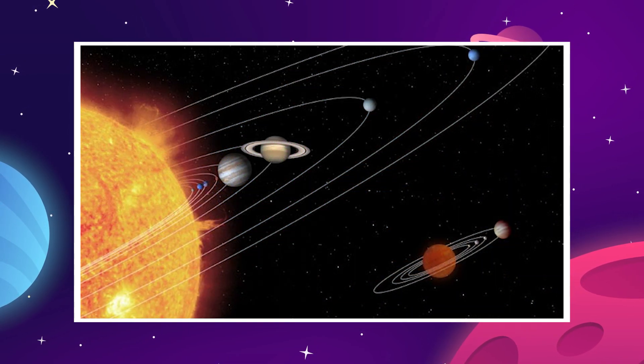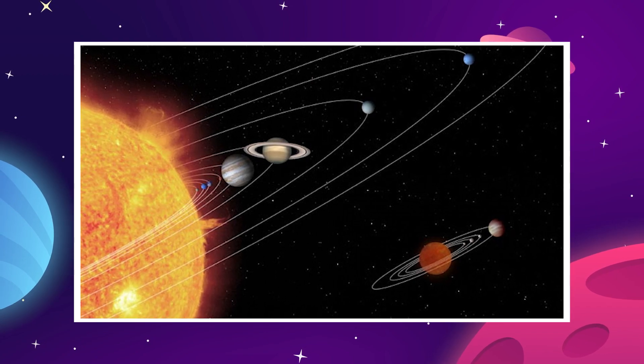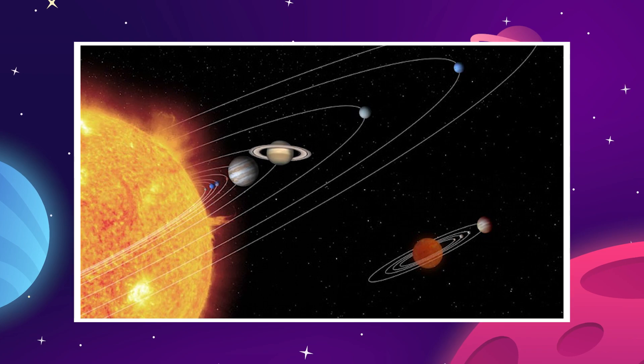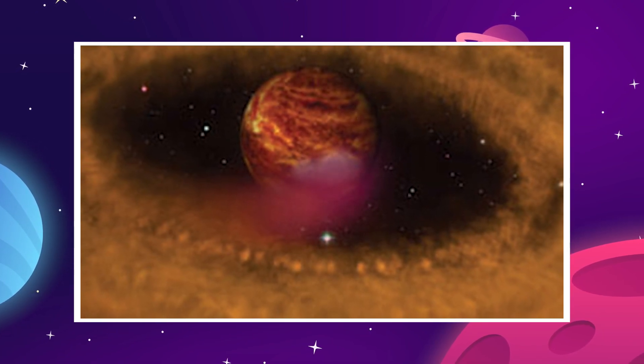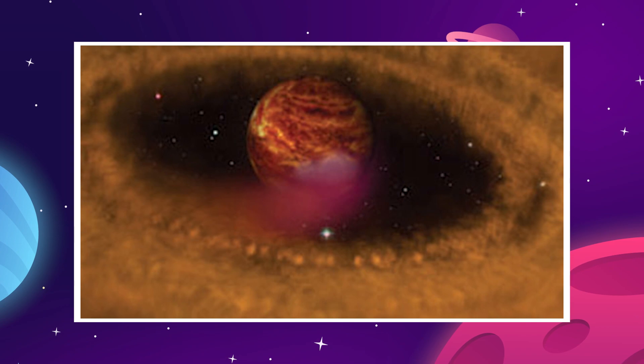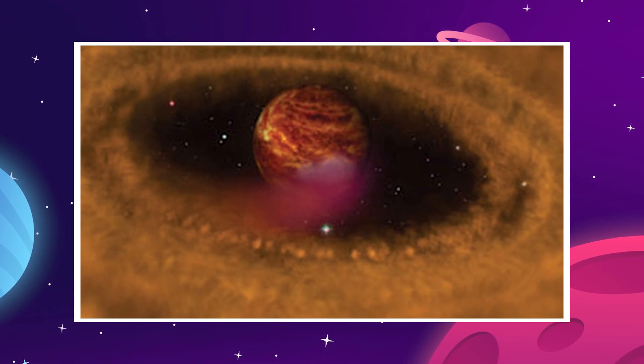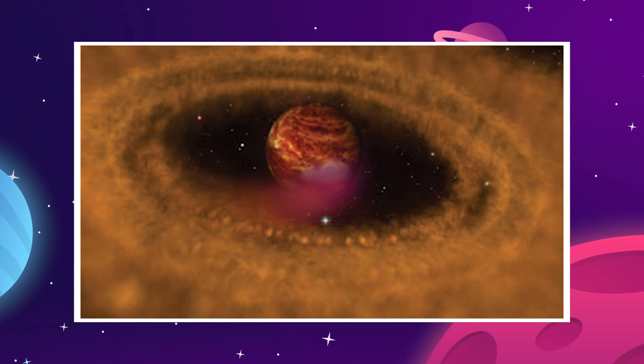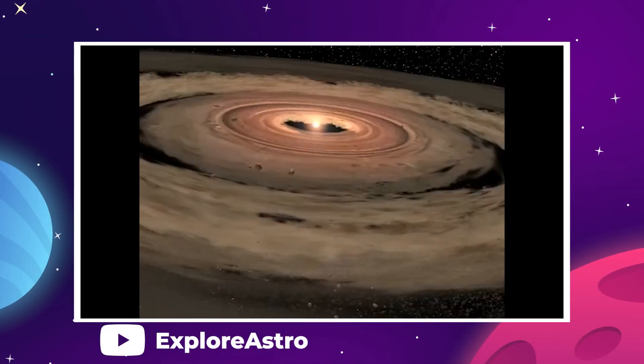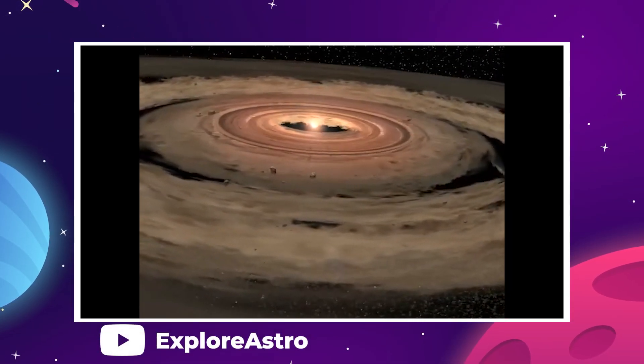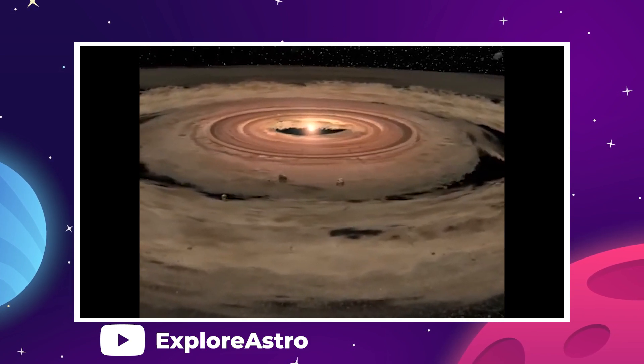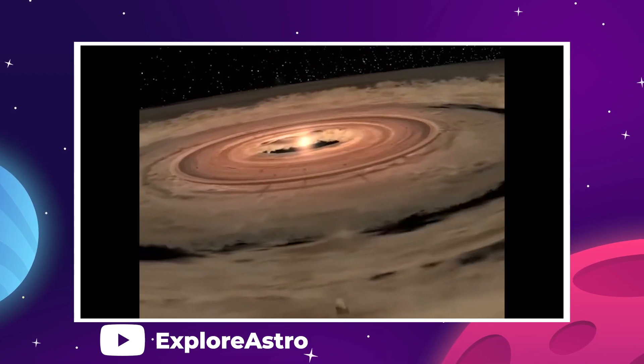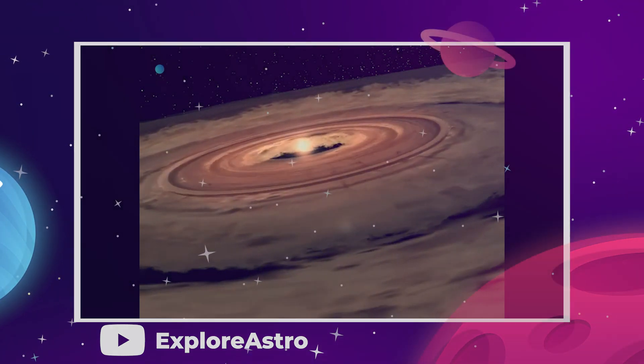But OTS-44 has been found to emit an excessive amount of infrared radiation for an object of its type, suggesting it has a circumstellar disk of dust, rock, and ice orbiting around it. The disk has a mass of at least 10 Earths, and therefore has the potential to develop into its own planetary system. So this rogue planet could evolve into a rogue planetary system flying through the galaxy on a journey to infinity.